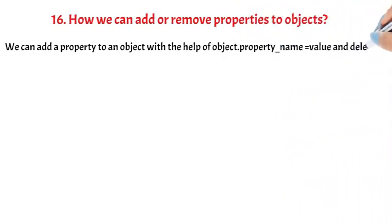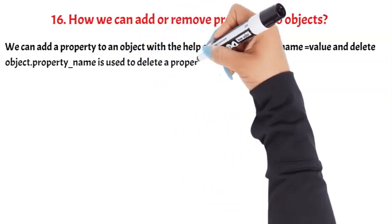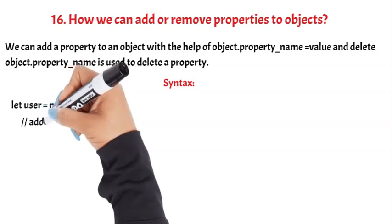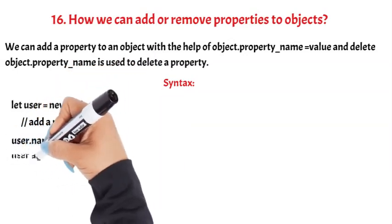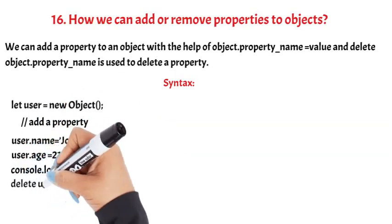We can add a property to an object with object.property_name = value, and delete object.property_name is used to delete a property. Syntax: let user = new Object(); user.name = 'John'; user.age = 21; console.log(user); delete user.age; console.log(user); Question 17.